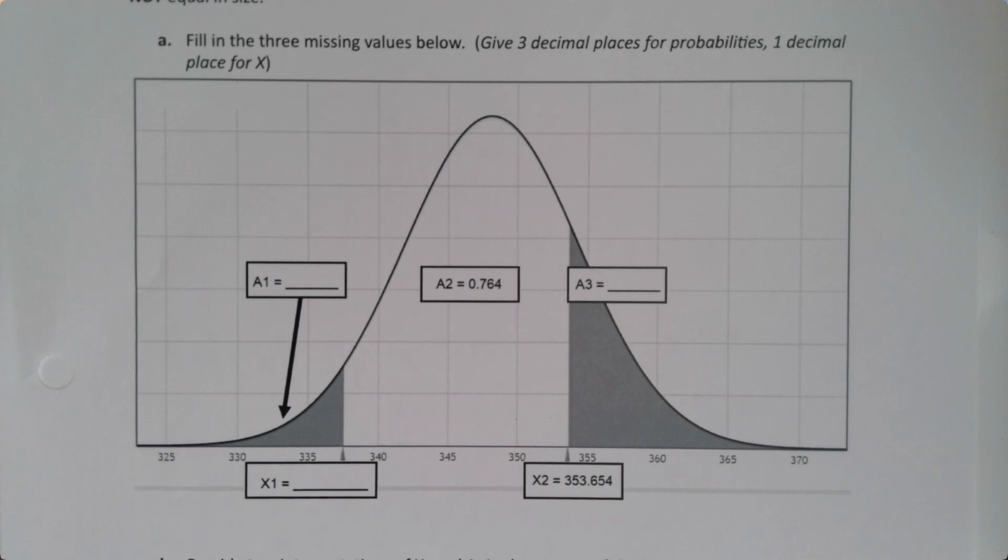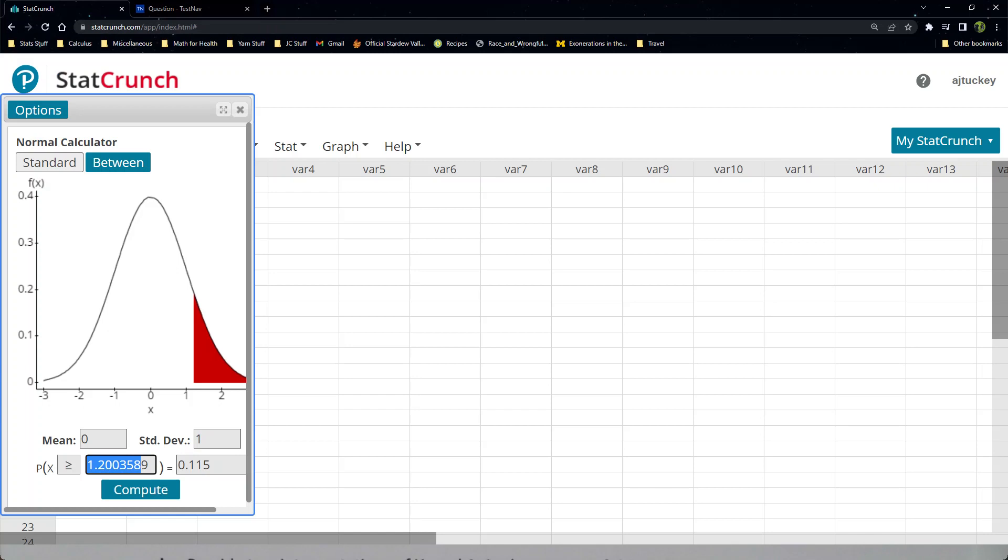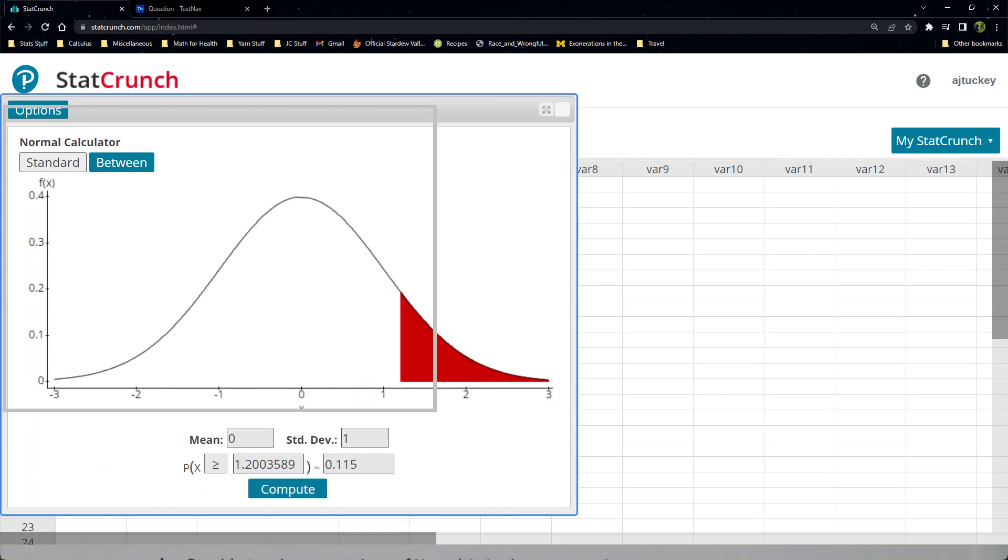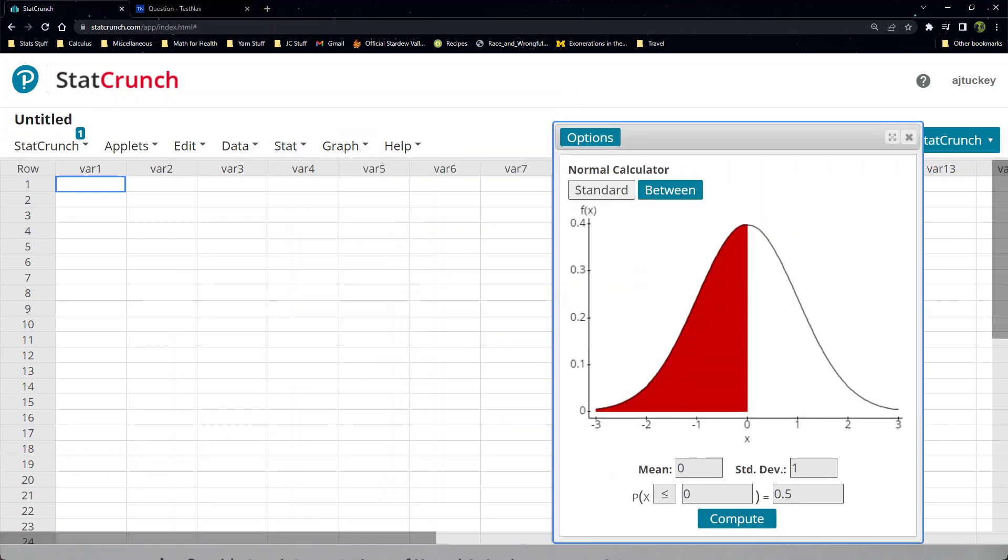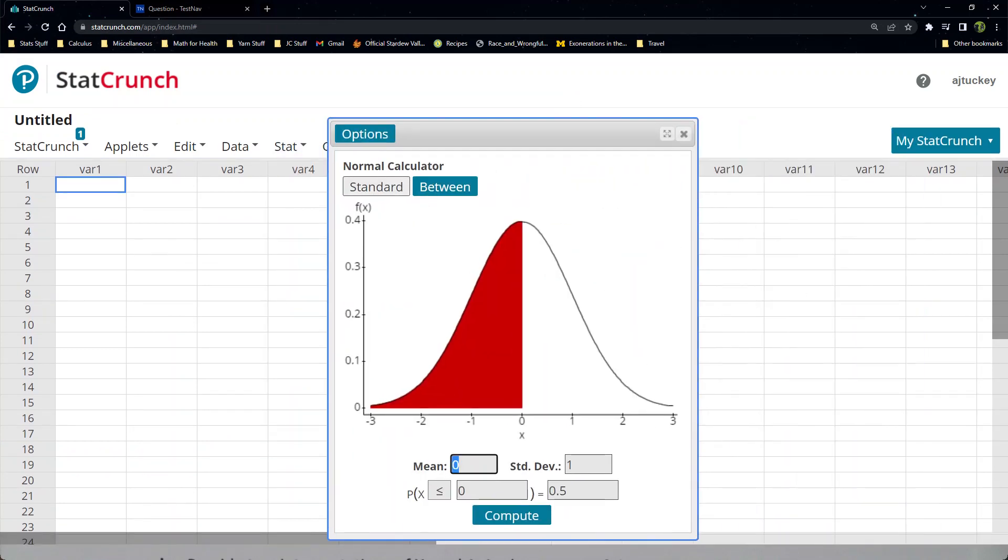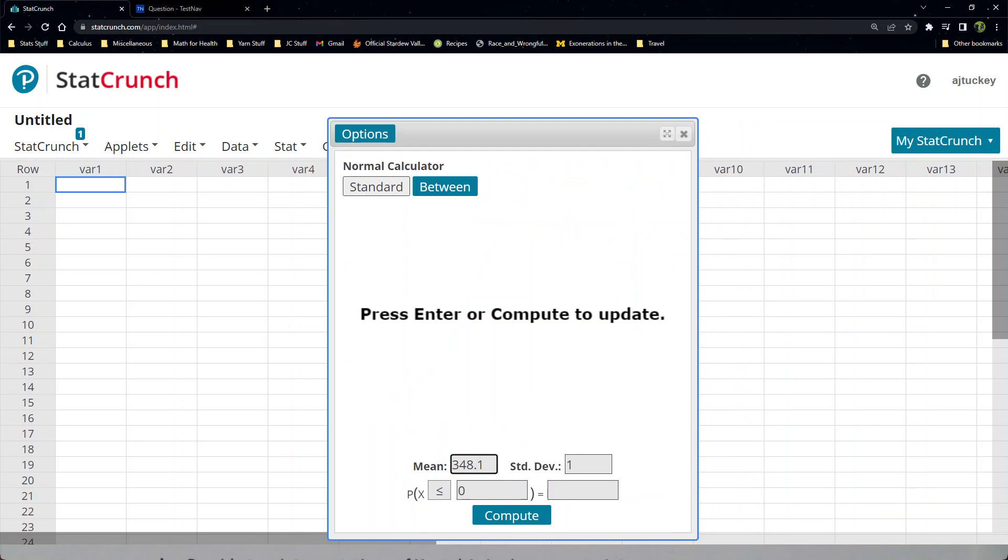Let me grab StatCrunch, which is over here. I have the normal curve already there, but I'll just remind you how to find it. So stat, calculators, normal. There it is. Now the mean was 348.1. The standard deviation was 6.3.